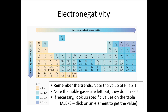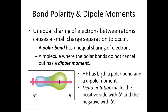Linus Pauling came up with his own scale, so bear in mind different people have come up with different ways to express electronegativity. This is how you write a dipole moment — a dipole is a charge separation. If you have a positive charge and a negative charge separated by a distance, that's a dipole. You write it by placing the tail of an arrow at the positive end and the arrowhead at the partial negative charge.